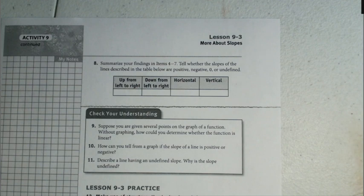Alright, last section says summarize your findings from items 4 through 7. Tell whether the slopes of the lines described in the table are positive, negative, zero, or undefined.